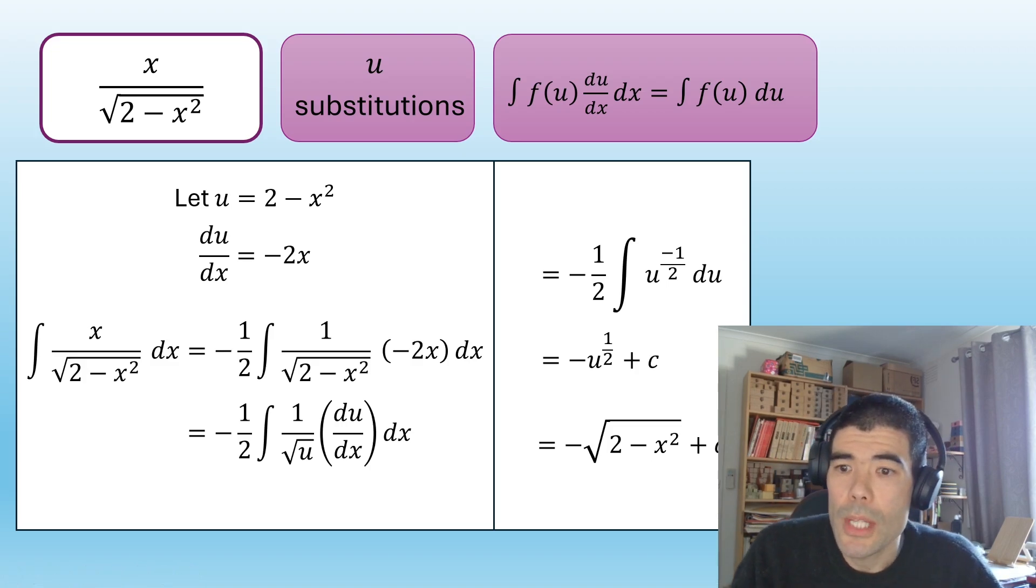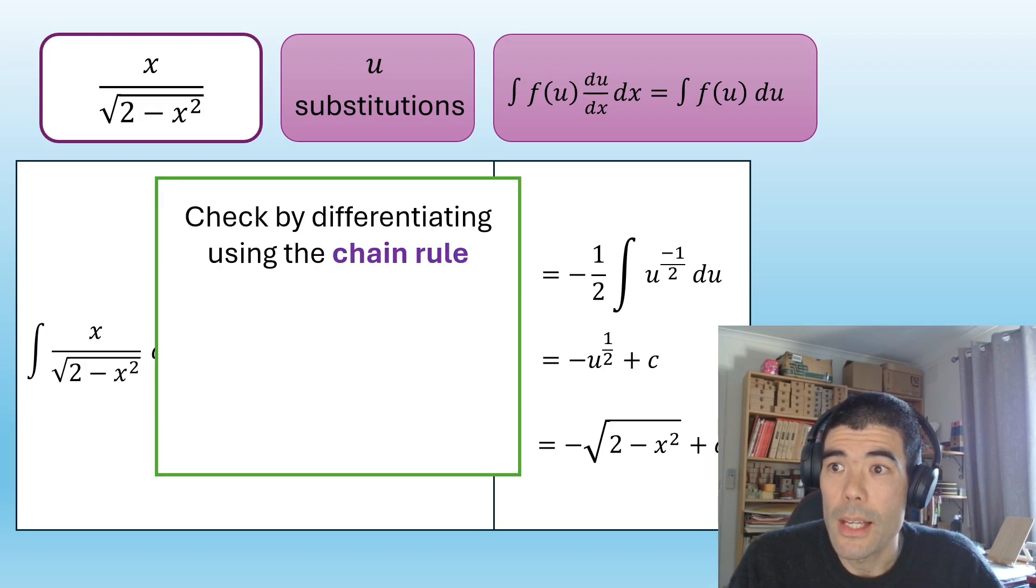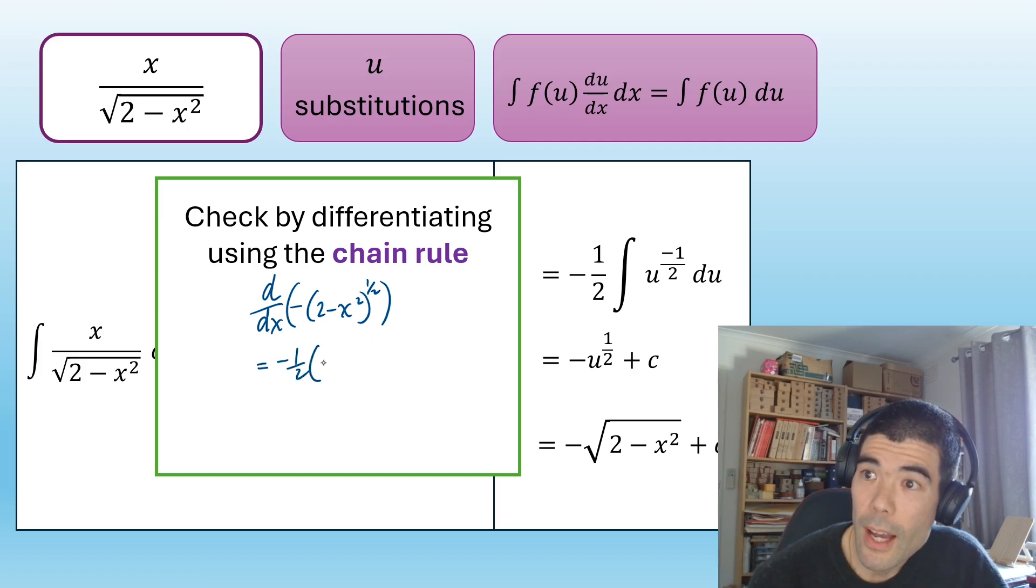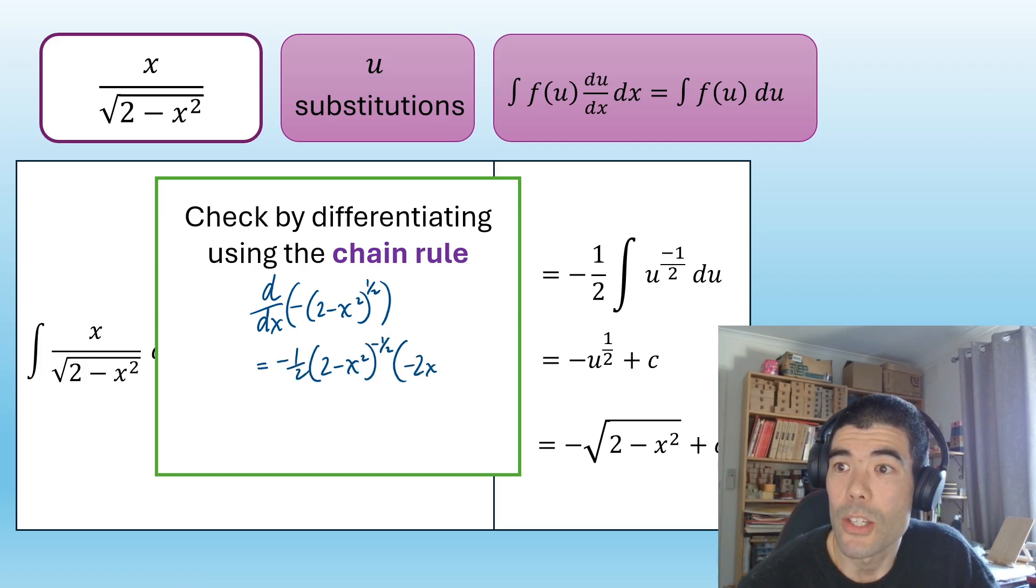As I said, the u-substitution is the reverse of the chain rule. So what we can do to check this answer is actually check it by differentiating it using the chain rule. How would we do that? So we've got 2 minus x squared to the power of 1 half. We would times down the half. Power then would be negative 1 half. And we will multiply by the du dx, which will be negative 2x. Okay, so that's a good way to check that we've actually done our u-substitution correctly. And you can always do that.